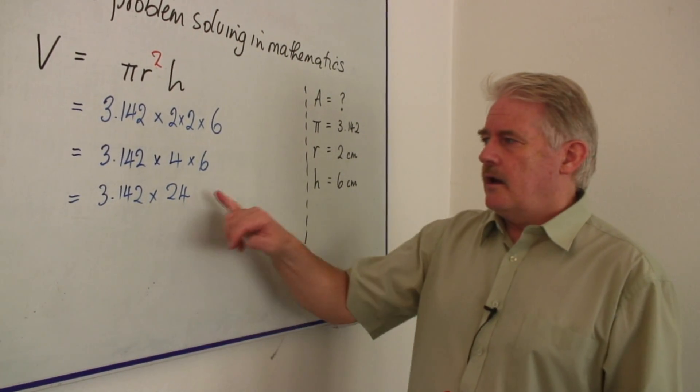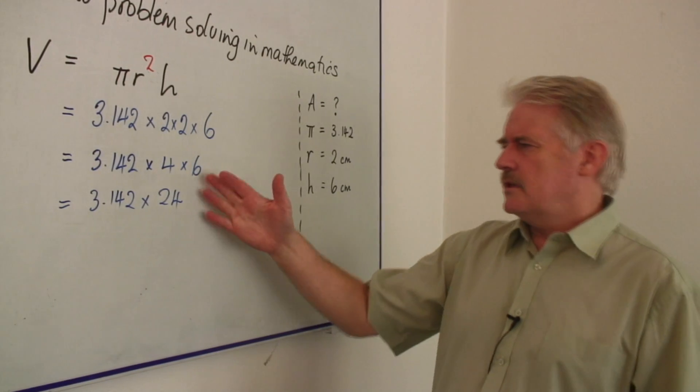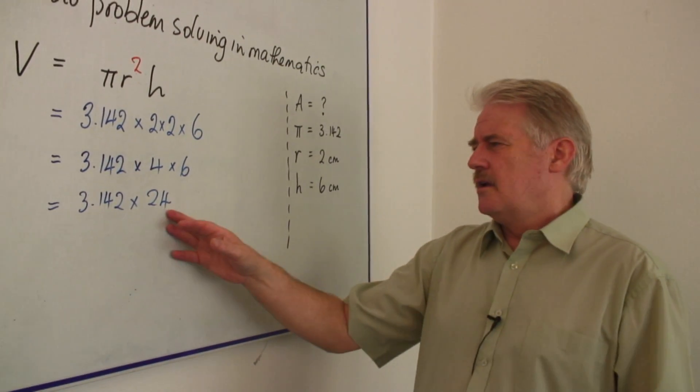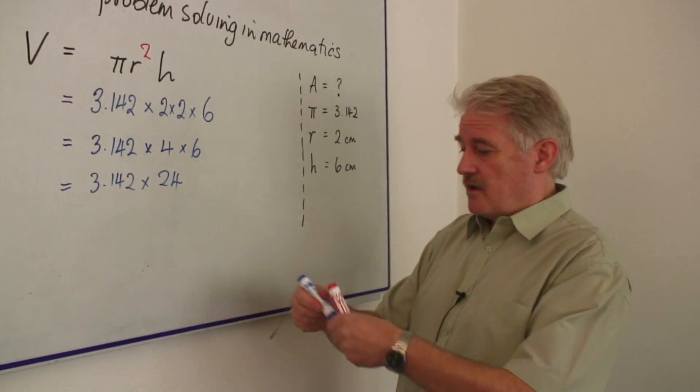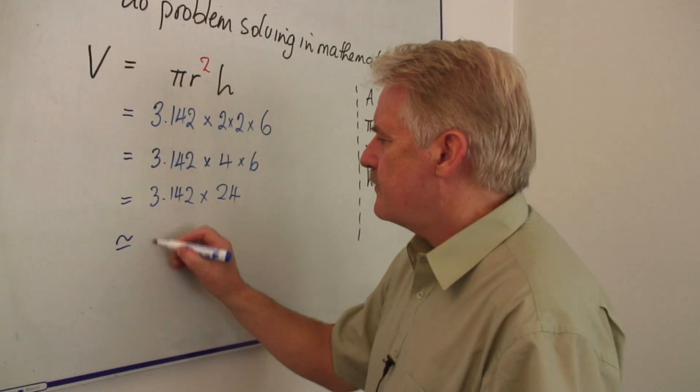At this point, I should be saying, well, this is going to be about, well, call that 25 and call that 3. 325, 75. Okay. It's about 75.